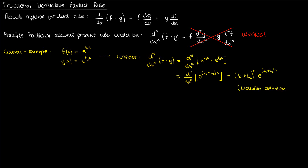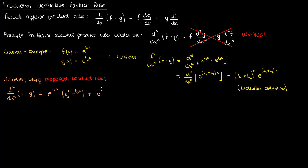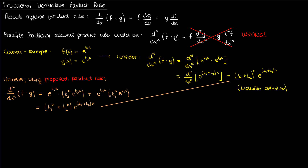I've used the Liouville definition of the fractional derivative here, which I encourage you to look up from a previous video. However, if I use the proposed product rule on this product of exponentials, I get the exponential of k1x times k2 to the alpha plus the same product with k1 to the alpha. Combining and simplifying gives k1 to the alpha plus k2 to the alpha times the exponential of k1 plus k2 times x. This is clearly different from the correct result, so the proposed product rule is wrong and we need something different.